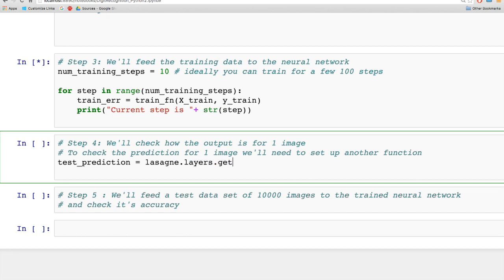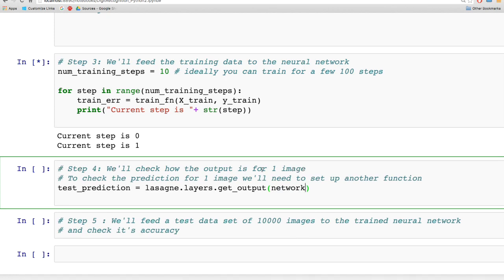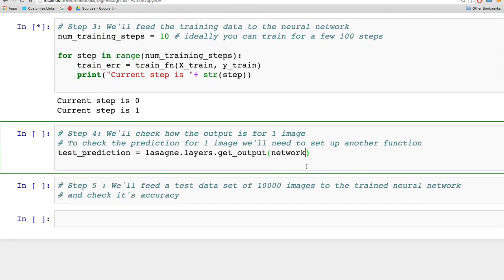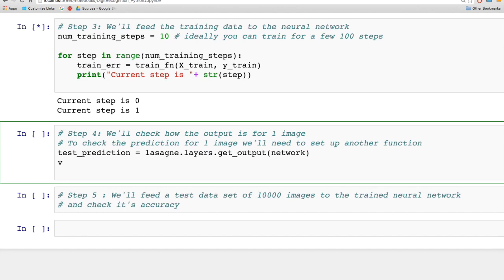First, we're setting up a function that will predict an output for an image. test_prediction is that function. It's basically lasagna.layers.get_output, and you pass in the network that you've trained.